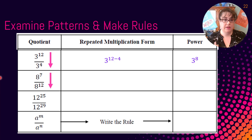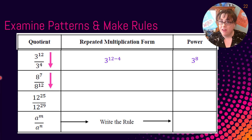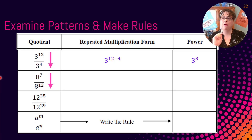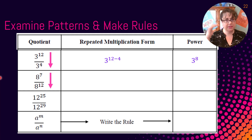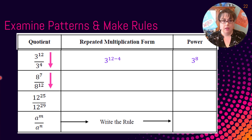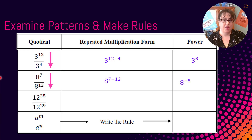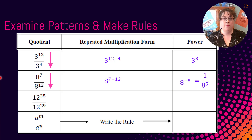Next: eight to the seventh over eight to the twelfth. Pay attention — where do we have more eights? This time there are more eights in the denominator, so we already know the answer will be a fraction. We do seven minus 12 and get eight to the negative five, which is an acceptable answer. But we can go a step further and rewrite it as one over eight to the fifth.